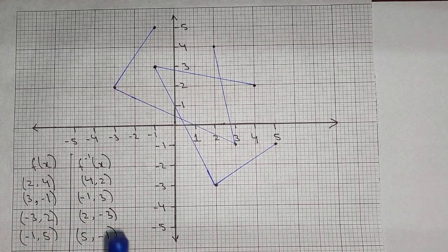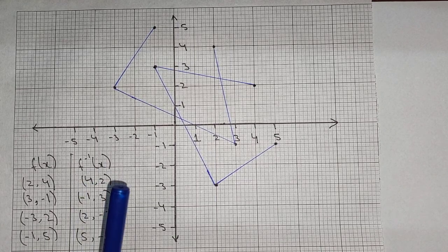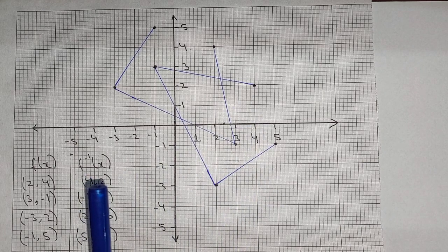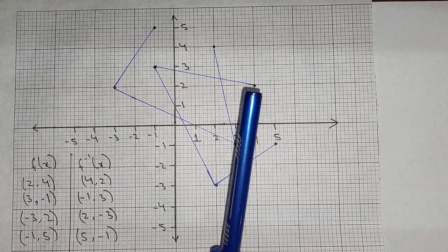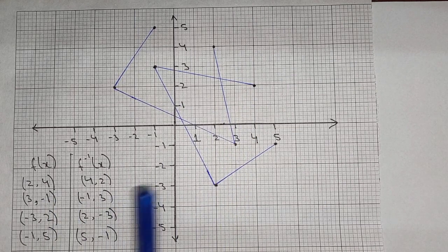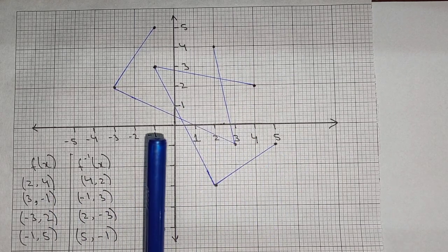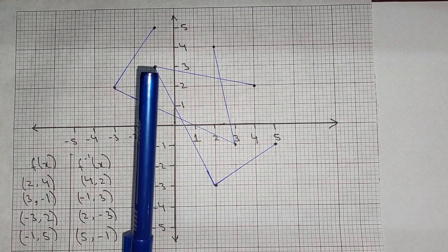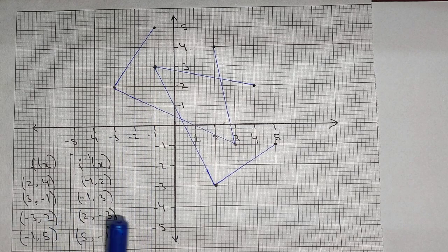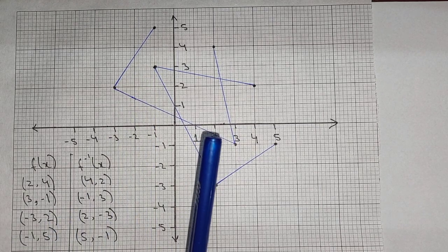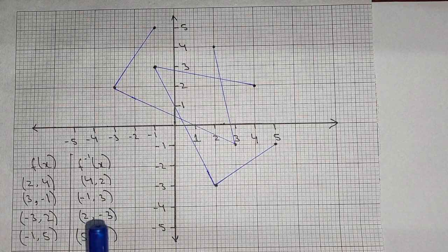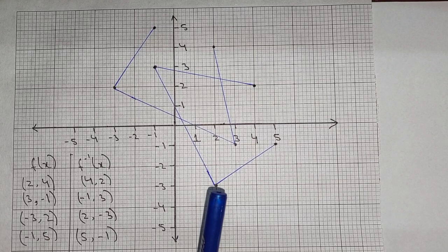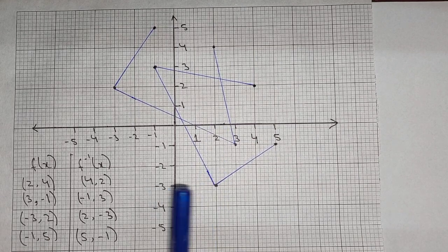Now here we have the coordinates 4 and 2 — so 4 with respect to the x-axis and 2 with respect to the y-axis. We will place the dot. And minus 1 and 3 — so minus 1 with respect to the x-axis and 3 with respect to the y-axis, this dot over here. Then 2 and minus 3 — so 2 with x and minus 3 with y — we will place the dot over here.